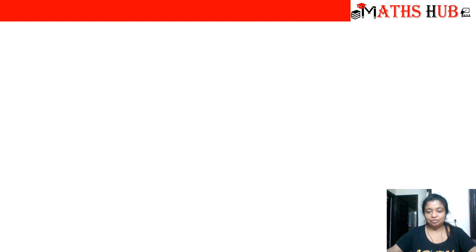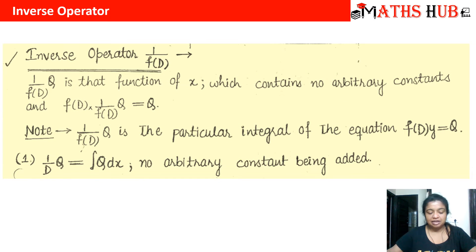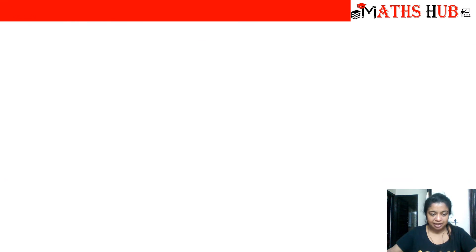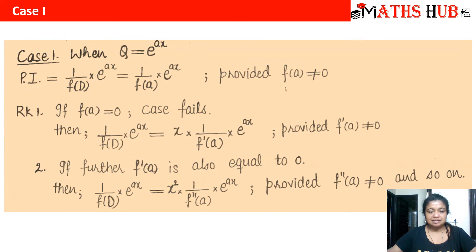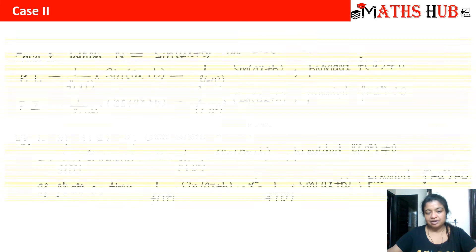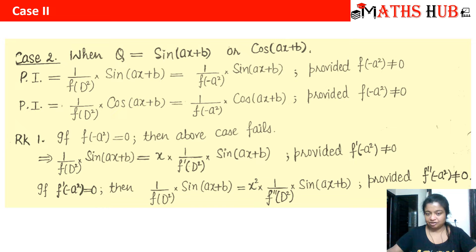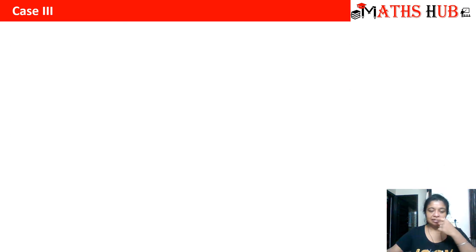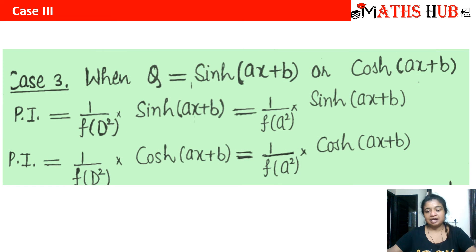Before we move on to Rule 6, let us quickly revise all the rules we have learned so far. The inverse operator 1 by d of q was integration of q dx. Rule 1 says that whenever we have an exponential function, we replace d with a. Rule 2 says whenever we have sine or cosine as a trigonometric function, we replace d squared with minus a squared. And in Case 3, when we have sinh or cosh functions, we replace d squared with plus a squared.